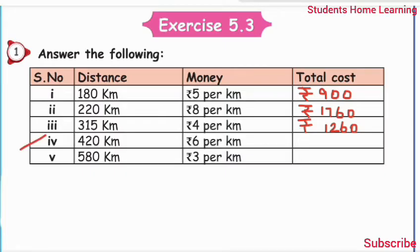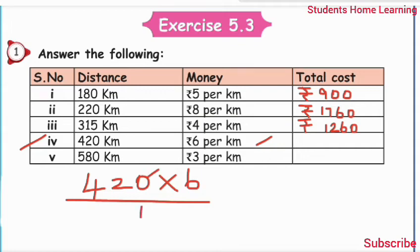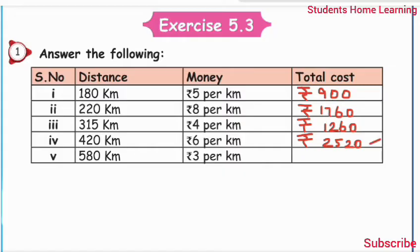Fourth sum: 420 km, rupees 6 per km. 420 multiply by 6: 6 times 0 is 0, 6 times 2 is 12, write 2, carry 1. 6 times 4 is 24, plus 1 is 25. Answer: rupees 2520.